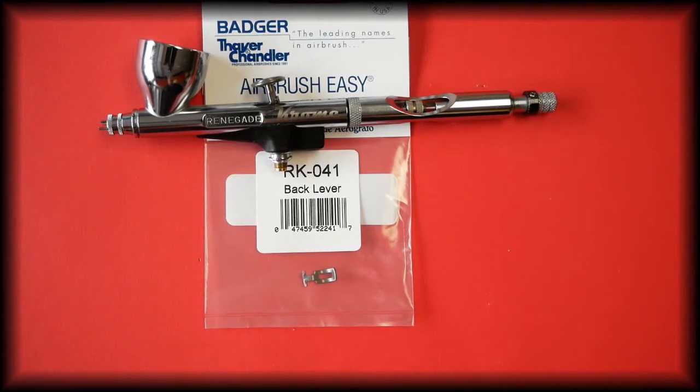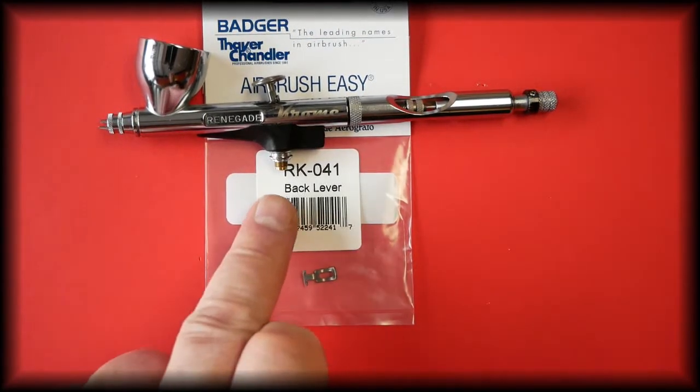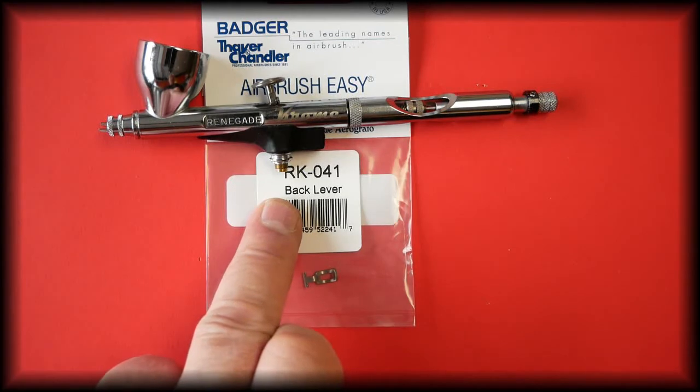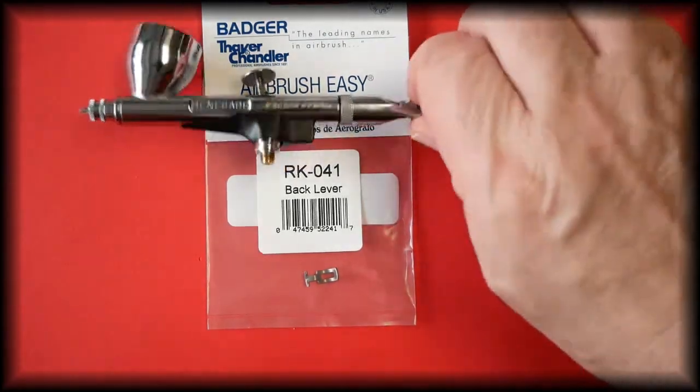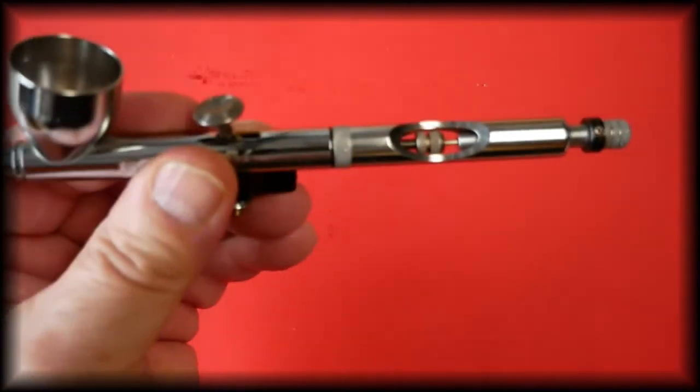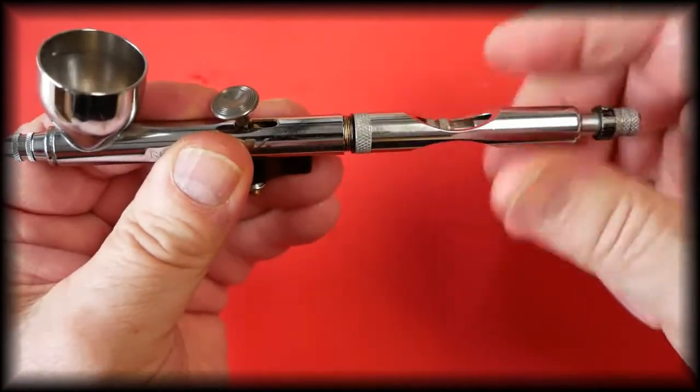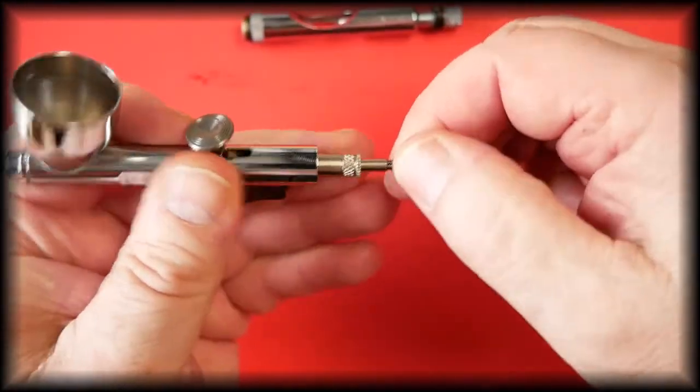In this video we're going to be talking about the Badger Chrome back lever. The part number for the back lever is RK-041. To remove and refit the back lever, we first remove the handle.